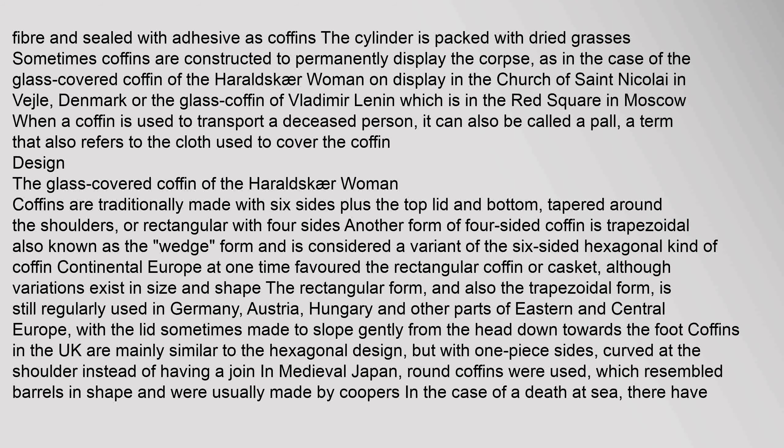Coffins are traditionally made with six sides plus the top lid and bottom, tapered around the shoulders, or rectangular with four sides. Another form of four-sided coffin is trapezoidal, also known as the wedge form, considered a variant of the six-sided hexagonal kind. Continental Europe at one time favoured the rectangular coffin or casket. The rectangular and trapezoidal forms are still regularly used in Germany, Austria, Hungary and other parts of Eastern and Central Europe, with the lid sometimes made to slope gently from head towards foot. Coffins in the UK are mainly similar to the hexagonal design but with one-piece sides, curved at the shoulder.